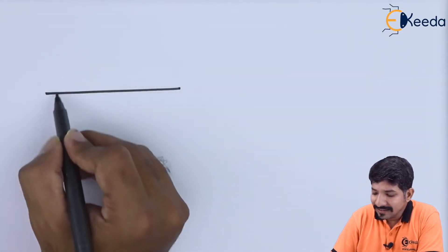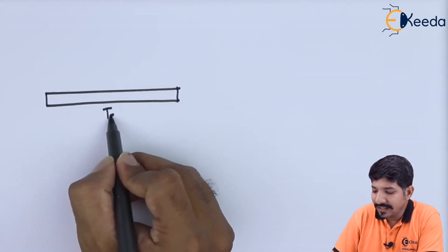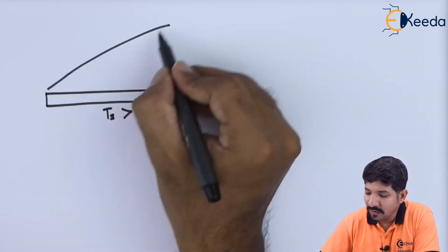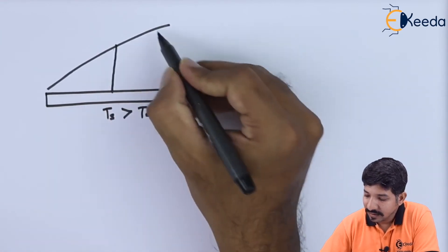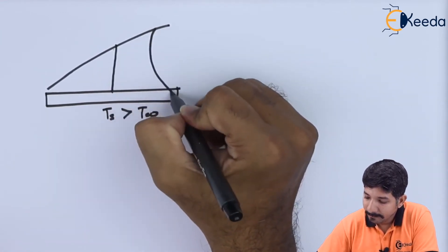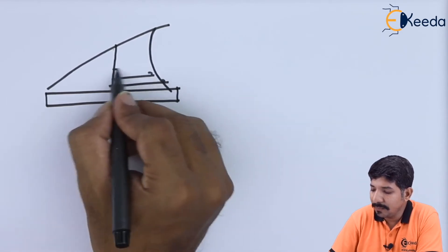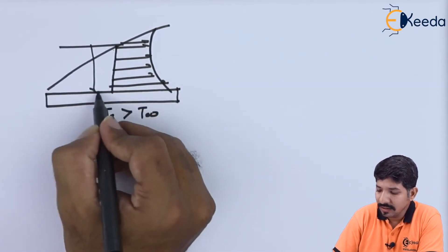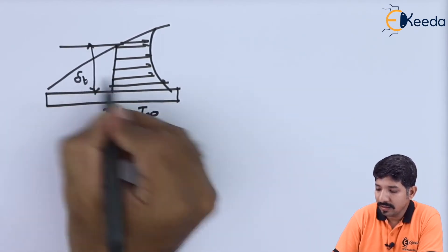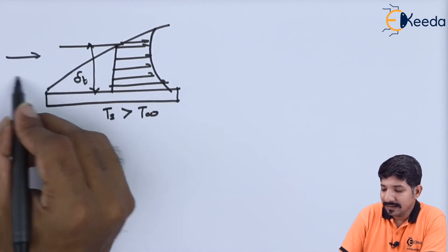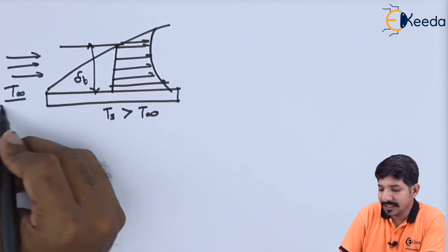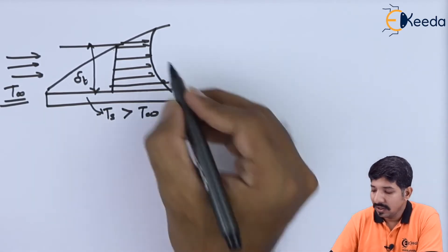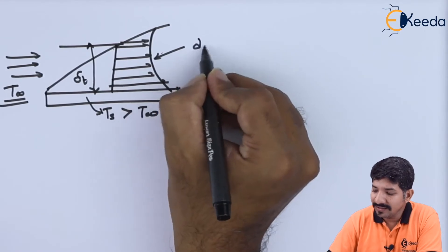In the case where the value of Ts is greater than T infinity, the profile will look something like this. Obviously the temperature will keep on decreasing. This is your delta T, and these are your free stream temperature T infinity and the surface temperature Ts. This will again cause a temperature gradient.